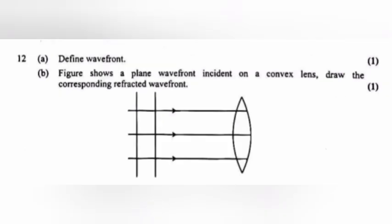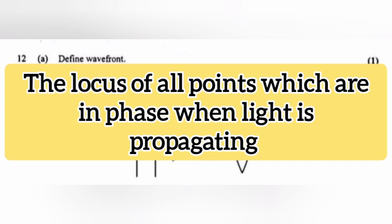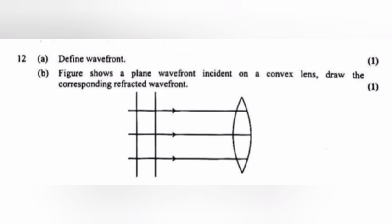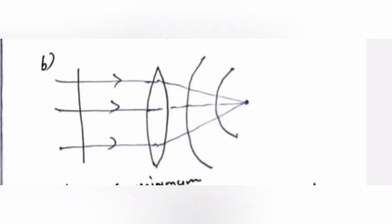Question 12: A) Define wavefront. Answer: The locus of all points which are in phase when light is propagating. B) Figure shows a plane wavefront incident on a convex lens. Draw the corresponding refracted wavefront.